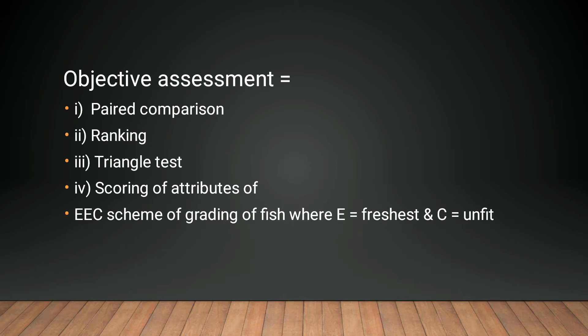Then there is the triangle test, where we are given three samples and by the comparison method we can detect which one is more suitable. Then there is scoring of attributes, where we can score the fish out of 10 using a hedonic scale.